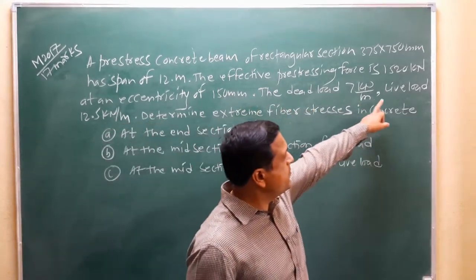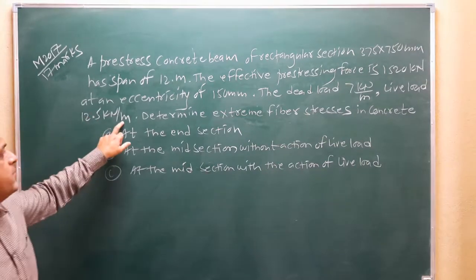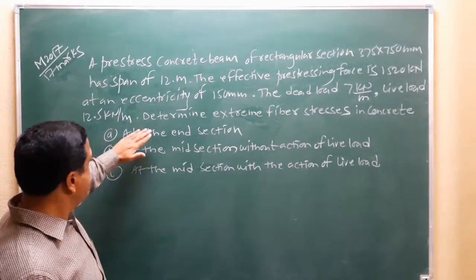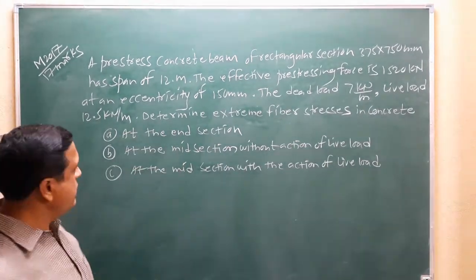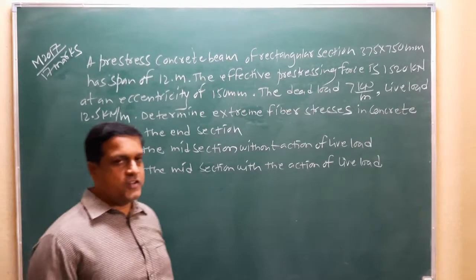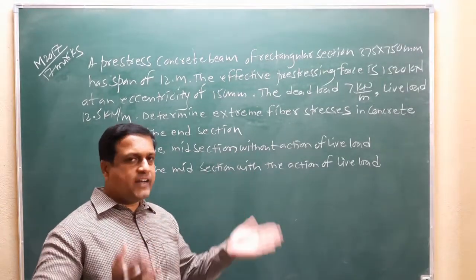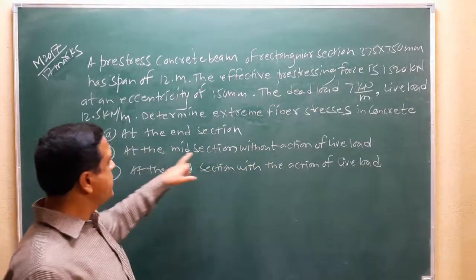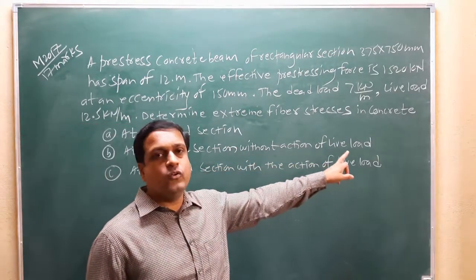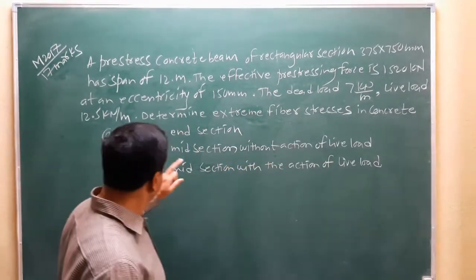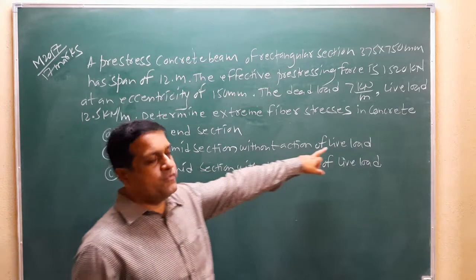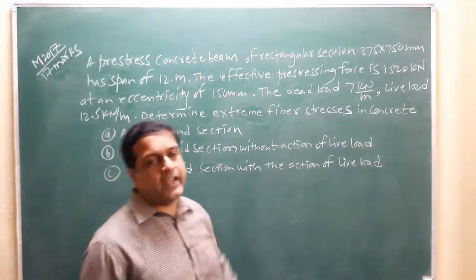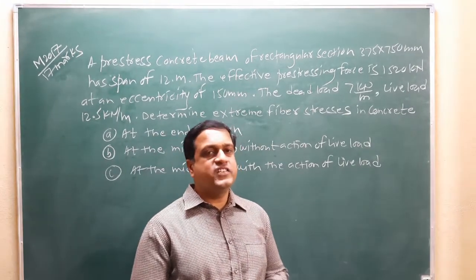The dead load is 7 kN per meter, live load is 12.5 kN per meter. Determine the extreme fiber stresses in concrete. You have to consider 3 cases here: one is at the end of the section, then at the mid-span section without the action of live load, and at the mid-section with the action of live load. You have to consider these 3 cases.